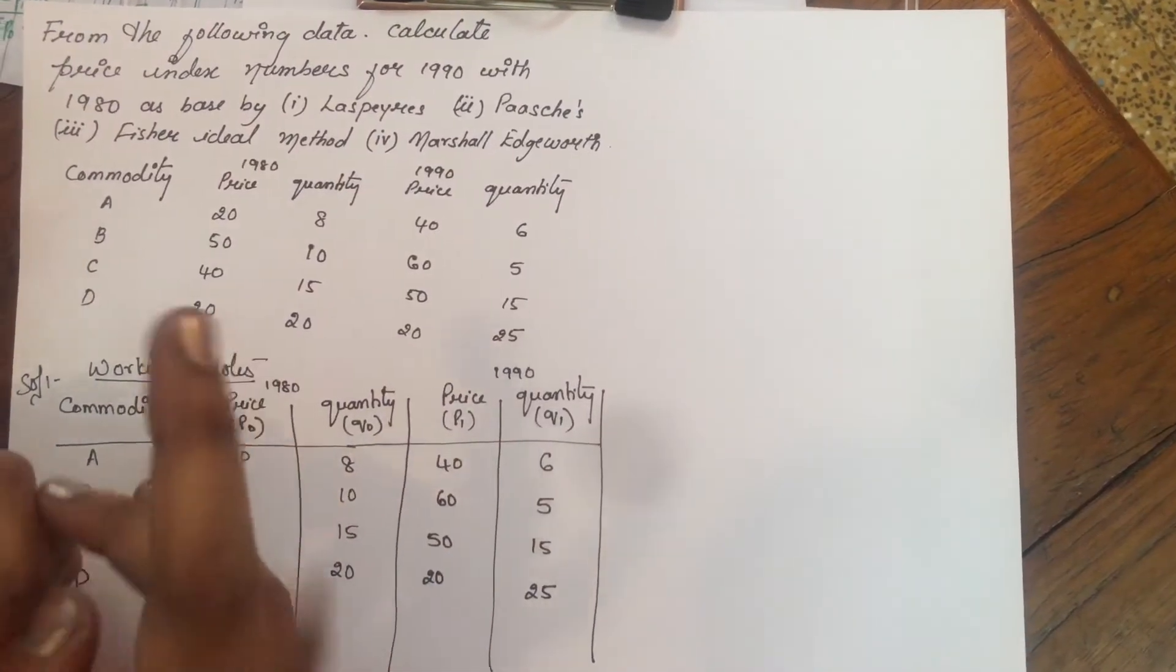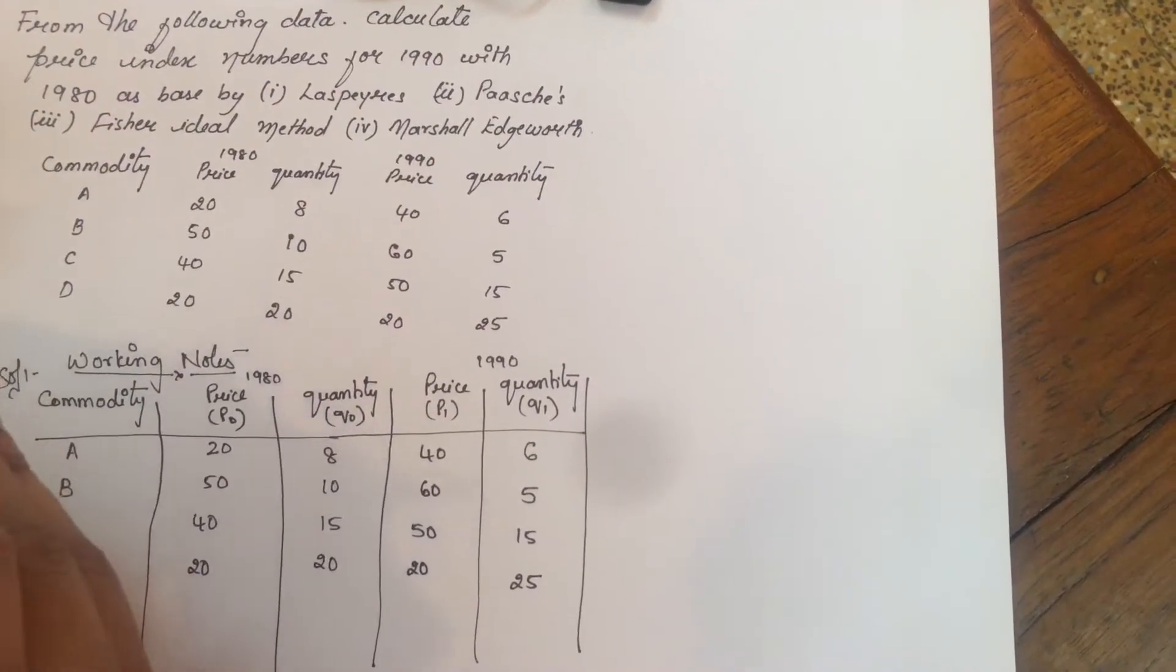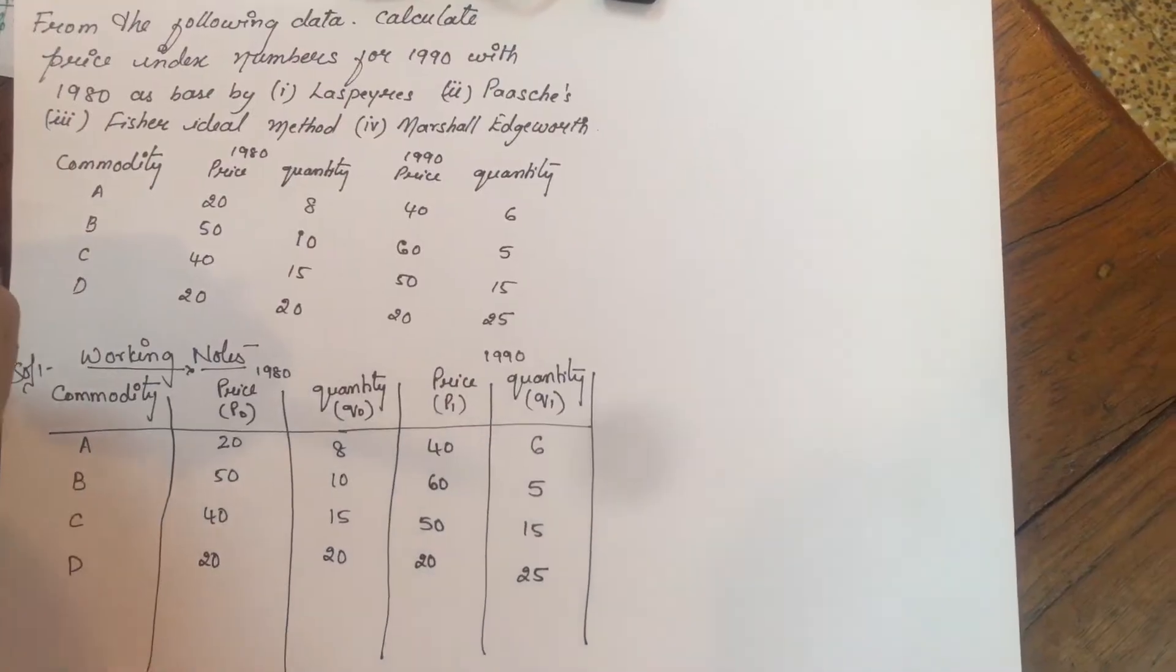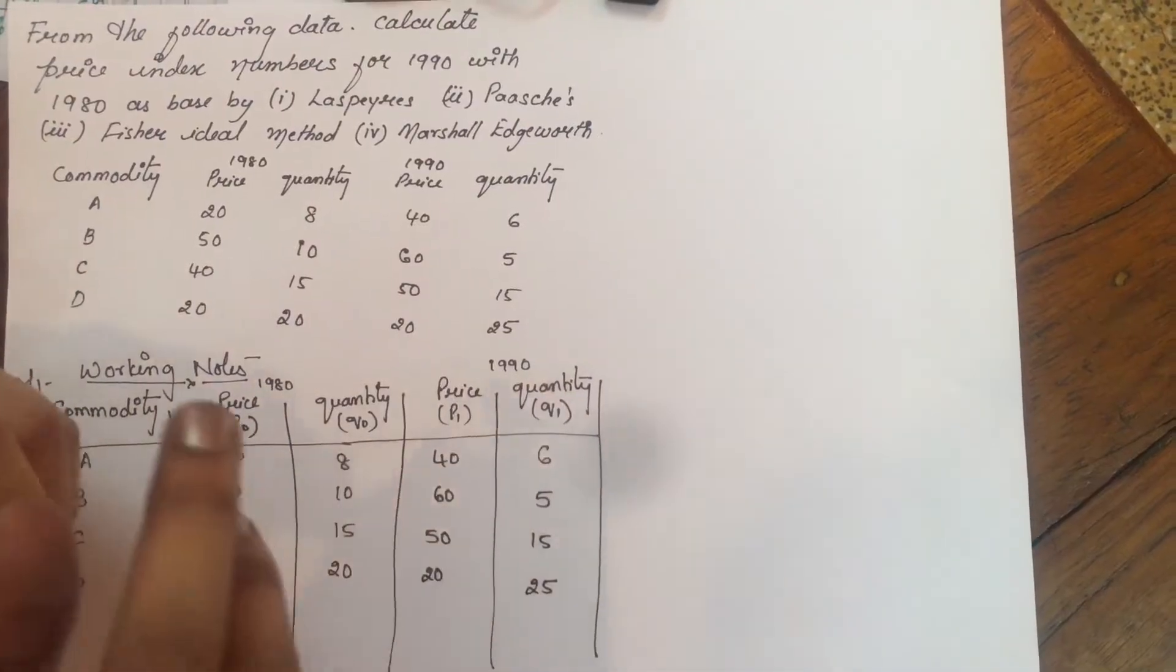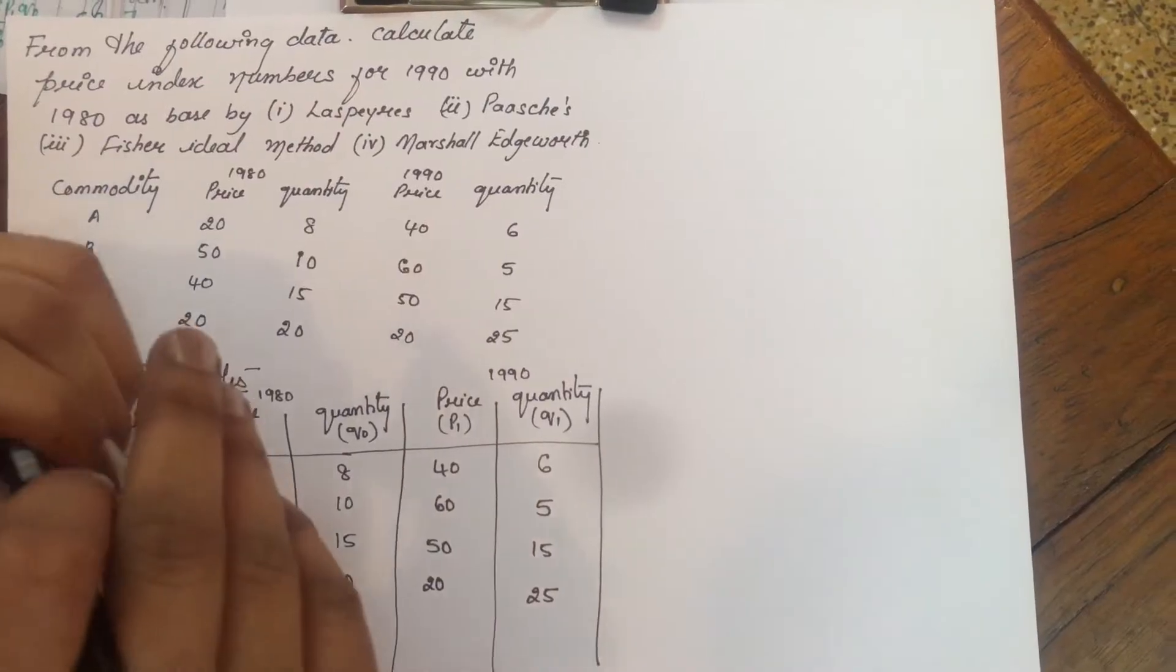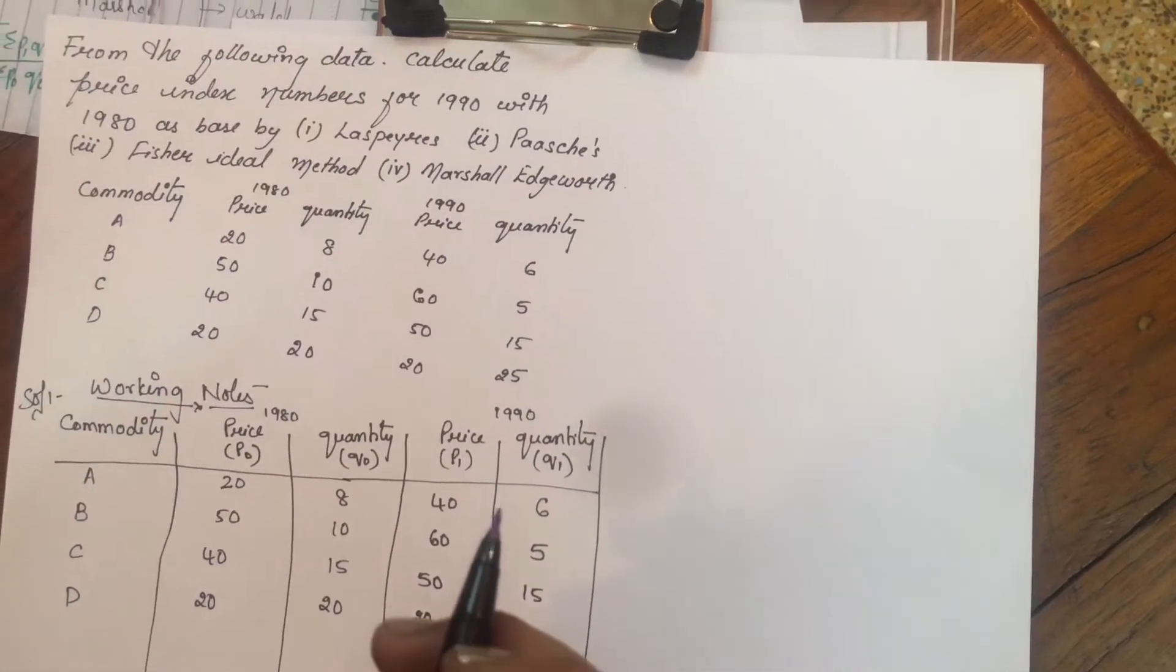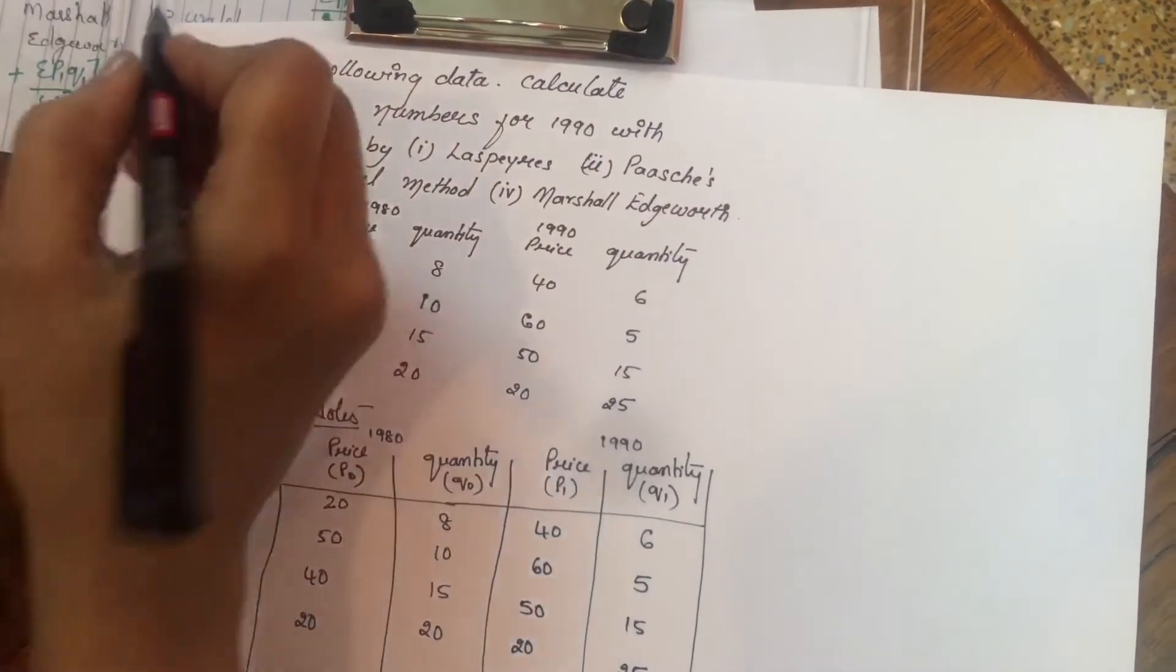Hello everyone. Today I came with a third part of index number. In my previous video I have explained you what is index number, what are the formulas related to it, and I have explained you problems related to simple aggregative method and simple average of price relative method.